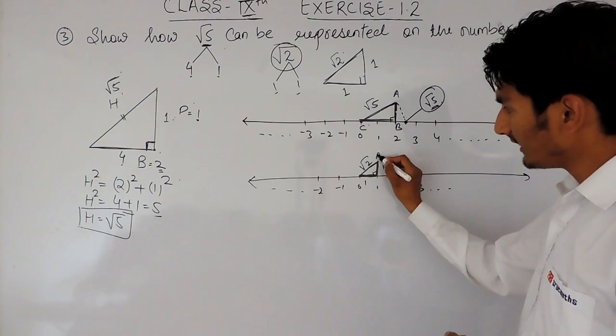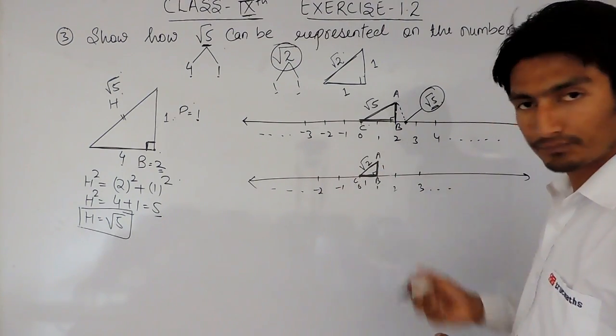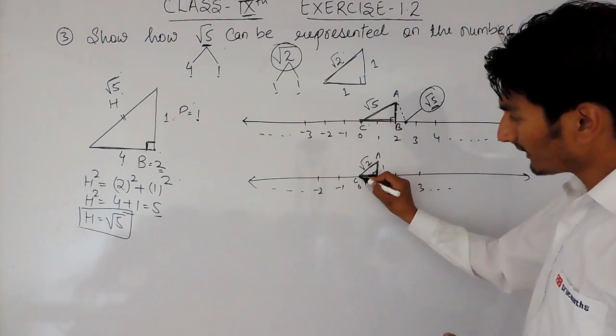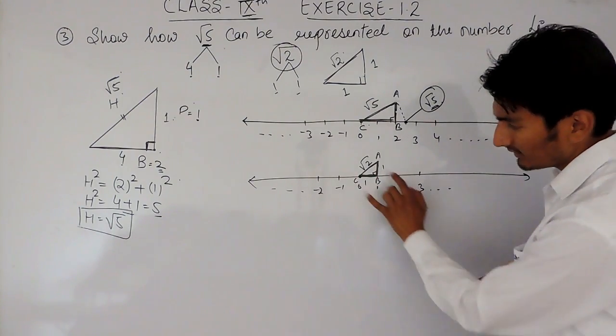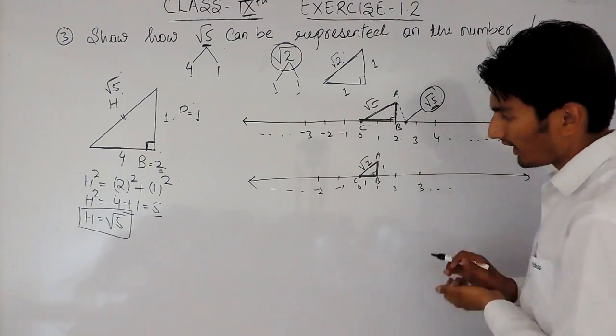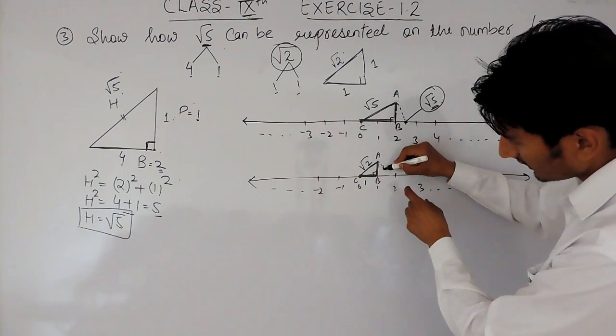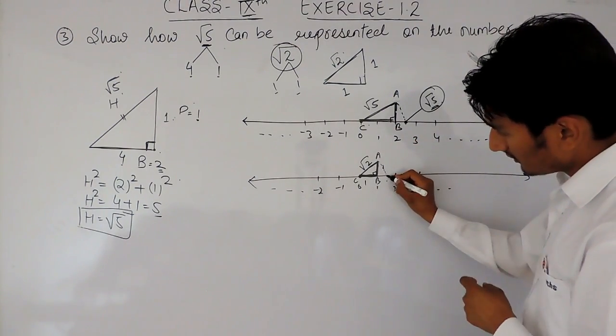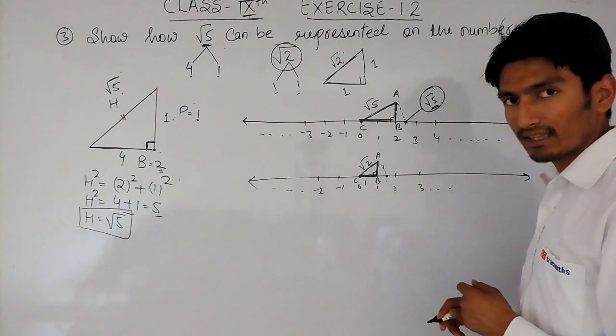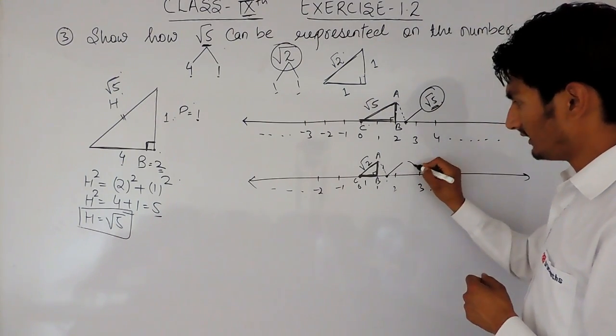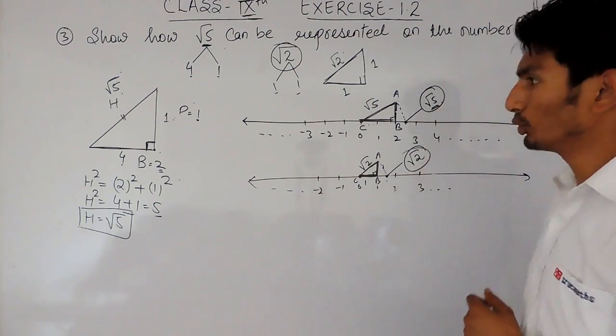again, if I name this ABC, and putting my compass here, and taking this AC as a radius, again, I have to draw an arc. So, this arc, wherever this intersects this number line, this point will represent root 2.